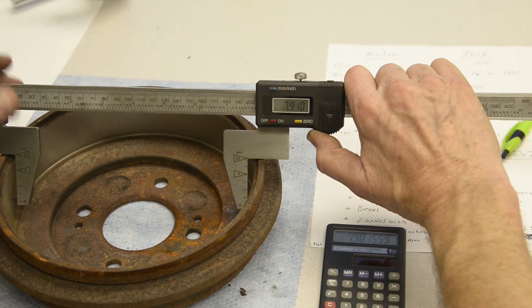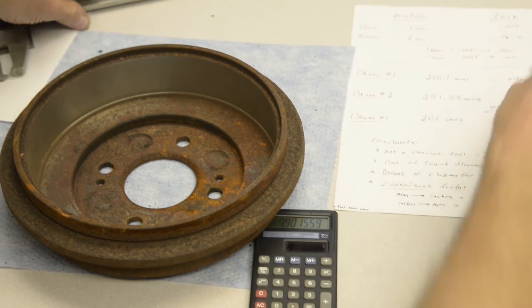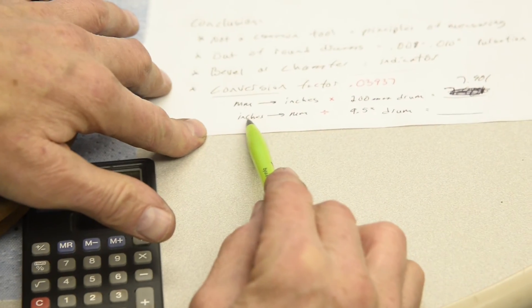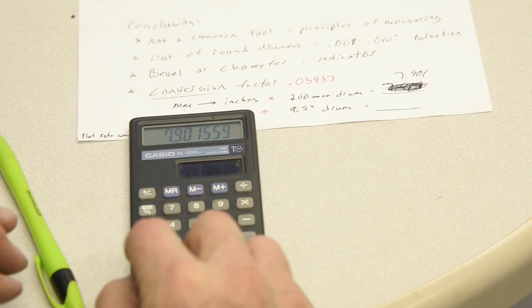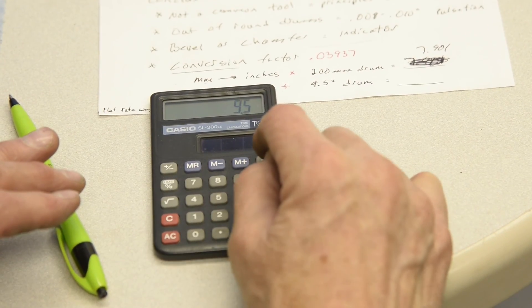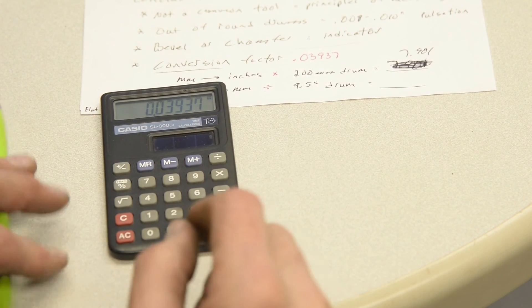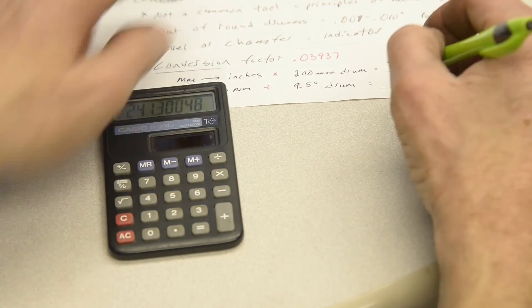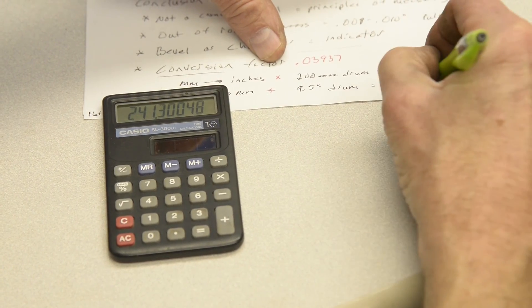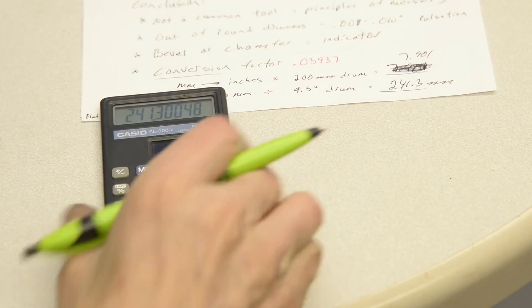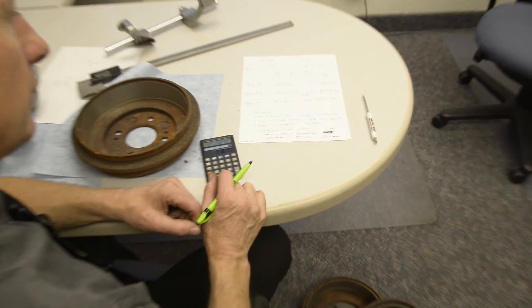Here's the flat rate way to convert back and forth from inches to metric. And if you wanted to convert from inches back to metric, you'd simply divide. I would take a 9.5 inch drum divided by 0.03937, that equals 241.3 millimeters. And that's how to use a metric drum micrometer. Thank you.